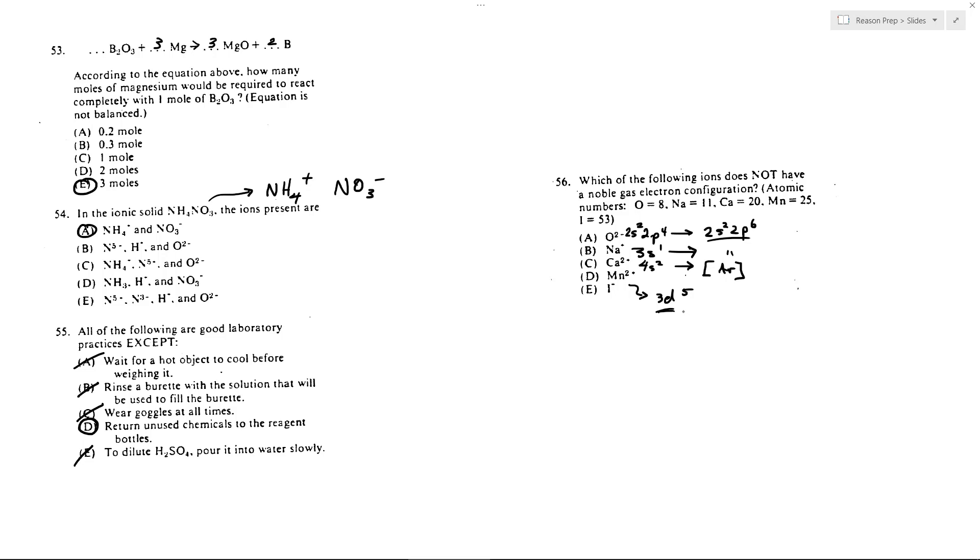And iodine, if you add an electron, it will become isoelectronic with xenon. So these all are noble gas configurations except for D.